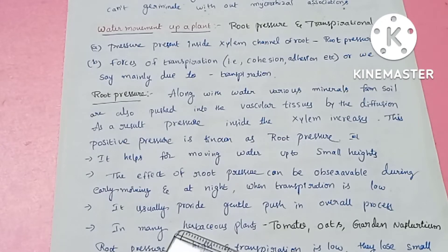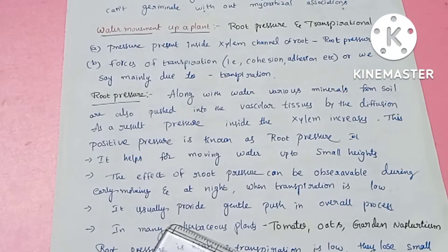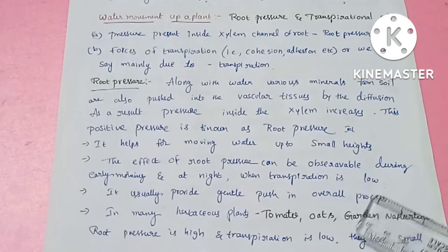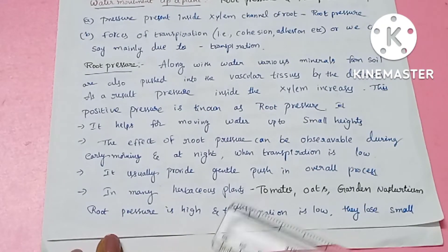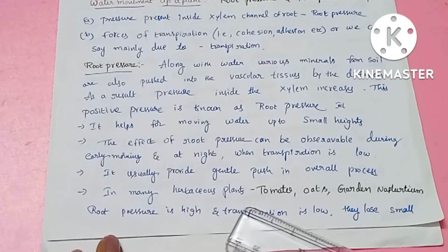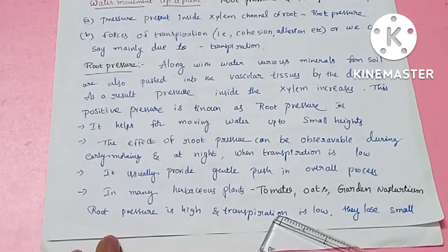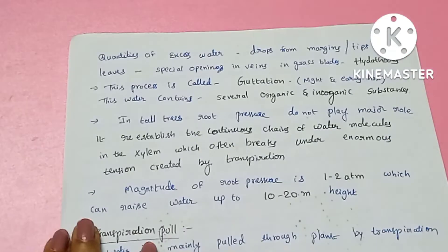Root pressure provides a gentle push to water in the xylem. There are many herbaceous plants like tomato, oats, garden nasturtium, and wheat where root pressure pushes a small amount of excess water.